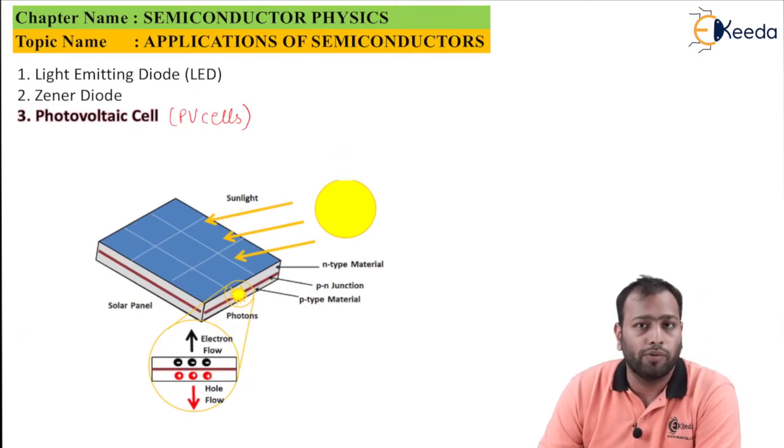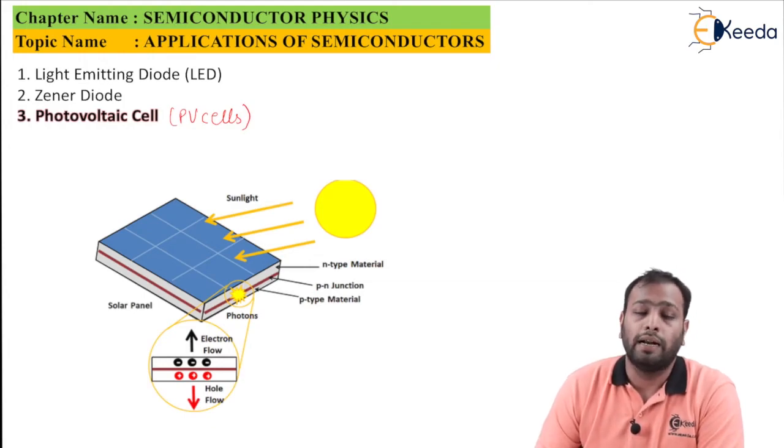So semiconductors have a great role in manufacturing of photovoltaic cells which are also at times called as PV cells. Now an important question for your viva: which type of current does PV cell emit? Always remember PV cell emits a direct current.